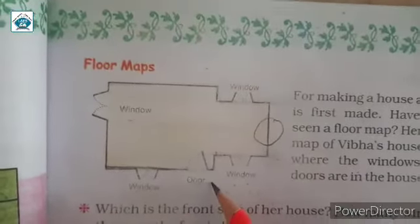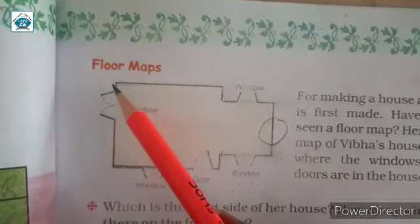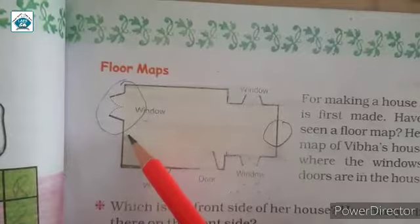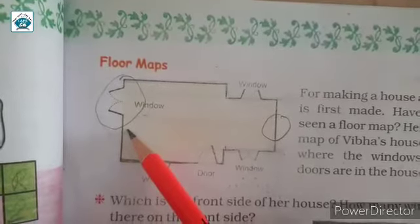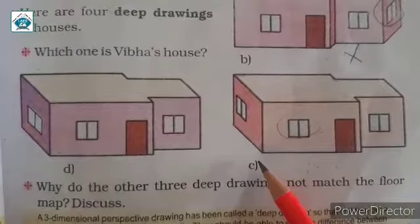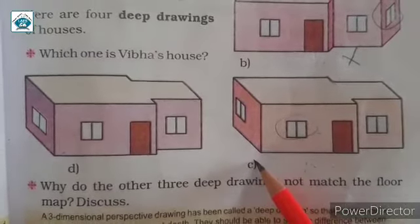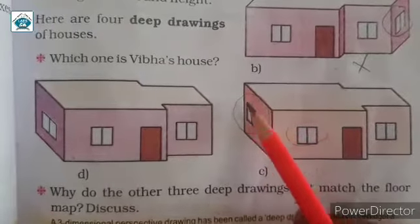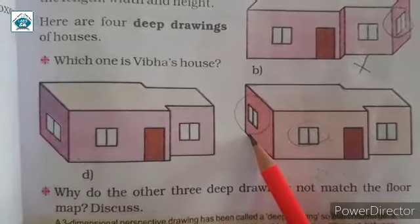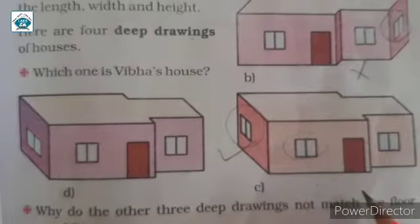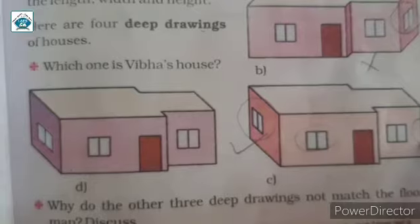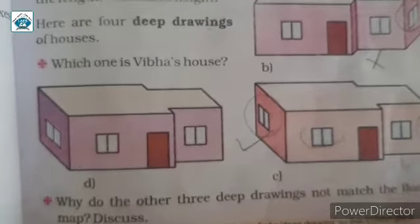So here you can see the side window is on the back side. It is not in middle. So here we can see that the window is exactly on a little back side. So this is correct. And here is no window. It is hidden. So this is correct answer.